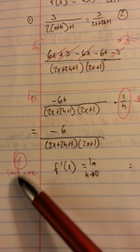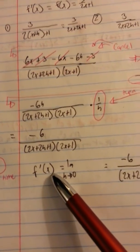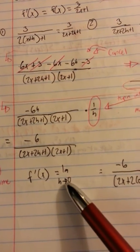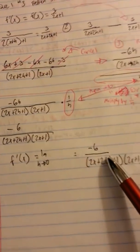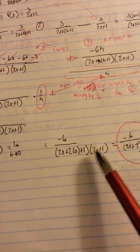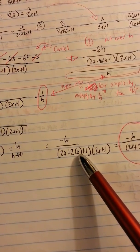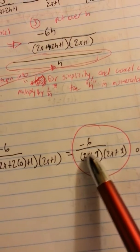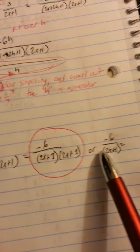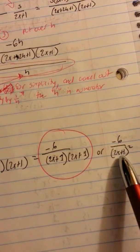The last step, the very last step here guys, is finding out the limit. f prime of x equals the limit as h approaches 0. And what do you do here? It's super simple. Take this fraction, just write it down over here again, and plug 0 wherever you see an h. That equals this. Negative 6 over 2x plus 1 plus 2x plus 1, or negative 6 over 2x plus 1 squared.